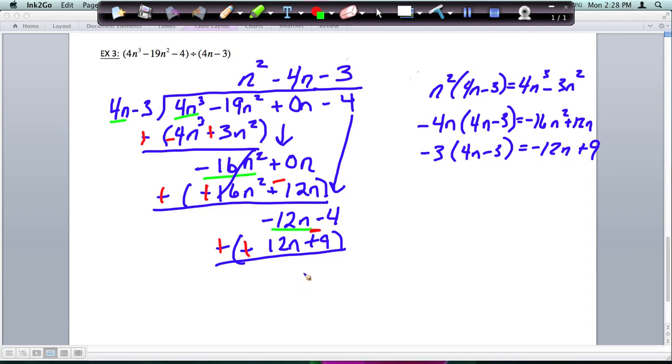I'll write r for remainder, is negative 13 over 4n minus 3, the divisor.